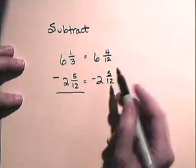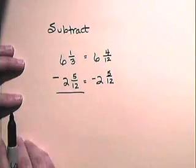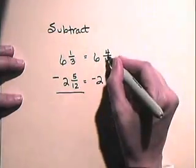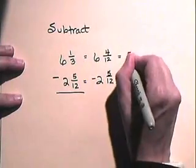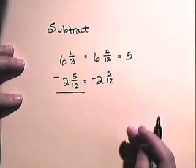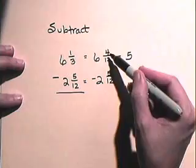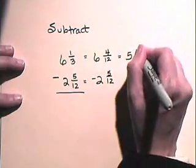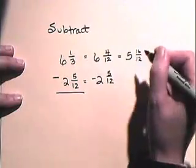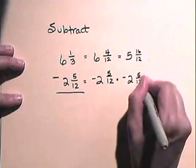But we can't subtract five-twelfths from four-twelfths. So we're going to have to borrow a whole number here and make the 6 be 5. Notice that we borrowed 12-twelfths because we borrowed one. So four-twelfths plus the 12-twelfths will be 16-twelfths. And we're going to subtract from that 2 and five-twelfths.